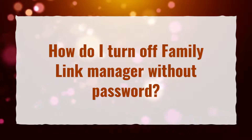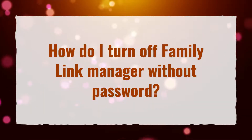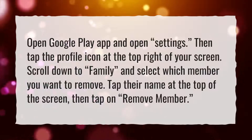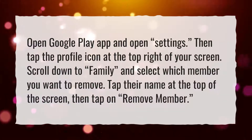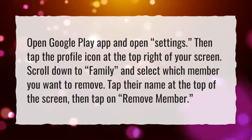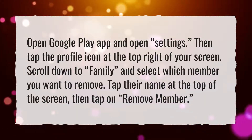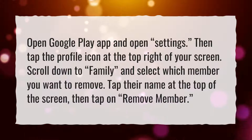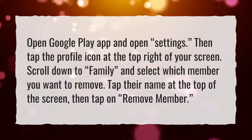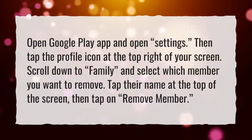How do I turn off Family Link Manager without a password? Open the Google Play app and open Settings. Then tap the profile icon at the top right of your screen. Scroll down to Family, and select which member you want to remove. Tap their name at the top of the screen, then tap Remove Member.